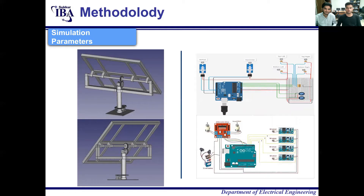These are the simulation parameters. On the right side you can see the mechanical design and on the right side are the simulation parameters — the control circuitry — which will control automatically. This mechanical design has two motors installed with a gearbox system. The secondary gear has 114 teeth and the primary gear has 20 teeth. We initially selected a stepper motor, but in the physical design we used a windshield wiper motor instead.